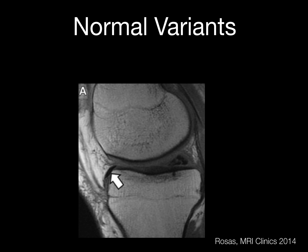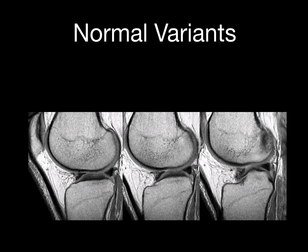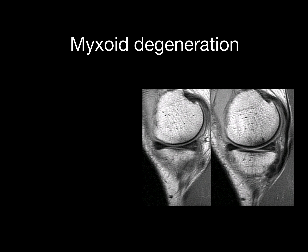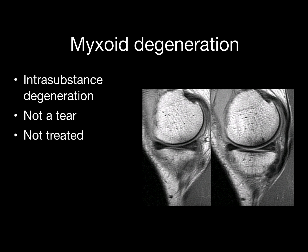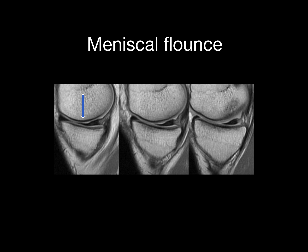There are some normal variants or normal anatomy that can be pitfalls for meniscal tears. Here's an example of a far anterior attachment of a meniscal root. Where the anterior cruciate ligament and the anterior horn of the lateral meniscus meet, this gives an increased signal appearance — this is normal anatomy and should not be interpreted as a tear. Myxoid degeneration refers to intrasubstance degeneration; it's not a true tear and is not treated. If the signal is well defined and comes from the periphery, especially in a younger patient, it is likely secondary to normal vasculature. Meniscal flounce refers to a wavy appearance of the meniscus and is not a true tear.